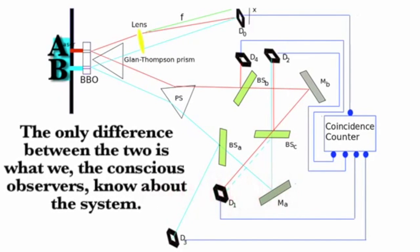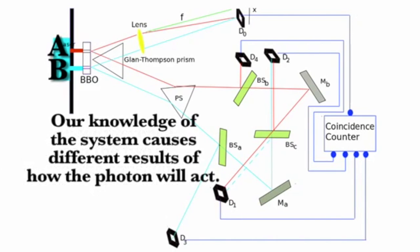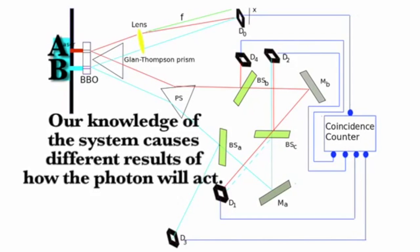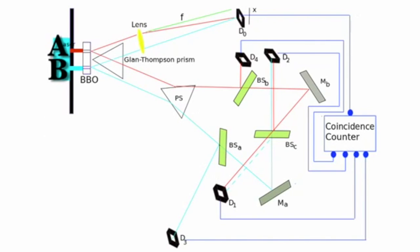But the only difference between these two is what we, the conscious observer, knows about the system. Our knowledge of the system causes different results in how the photon will act. If it was all random and not caused by our knowledge, we should get some clump patterns at D one and some interference patterns at D three. But that is not what the experiment shows.